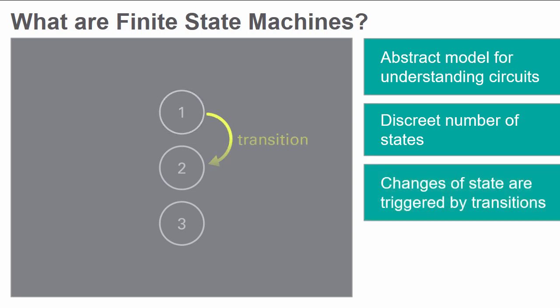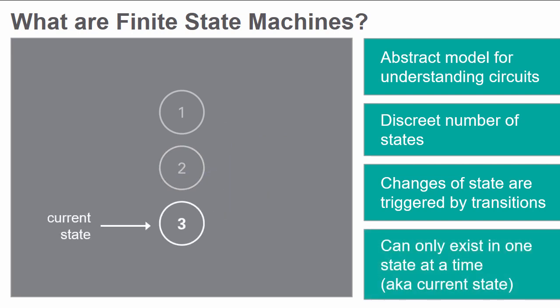Changes of state are triggered by particular events known as transitions. The machine can only exist in one state at any given time, known as the current state.